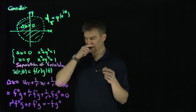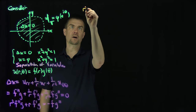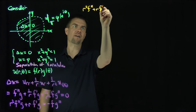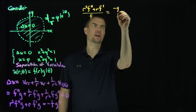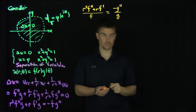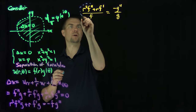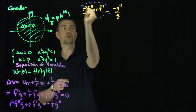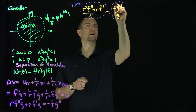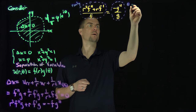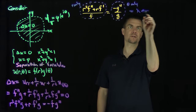Dividing by f and g (assumed nonzero), we get (r² f'' + r f') / f = −g'' / g. The left-hand side is a function of r only, and the right-hand side is a function of θ only. Therefore both sides must equal some constant lambda — the separation constant.